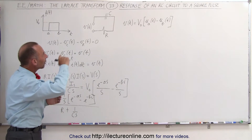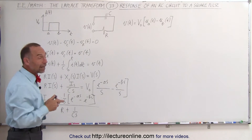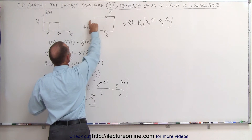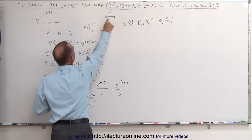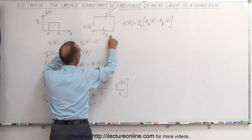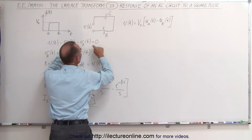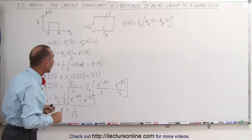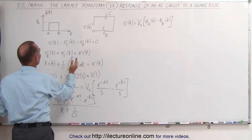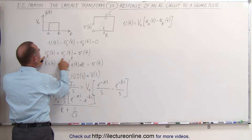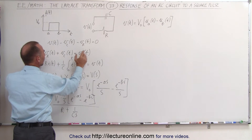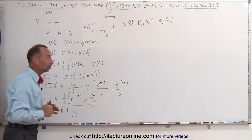Going around the circuit and adding up all the voltages, the voltage across the input minus the voltage across the capacitor minus the voltage across the resistor equals zero — that's Kirchhoff's rules. Rearranging, V sub R plus V sub C equals the voltage input.